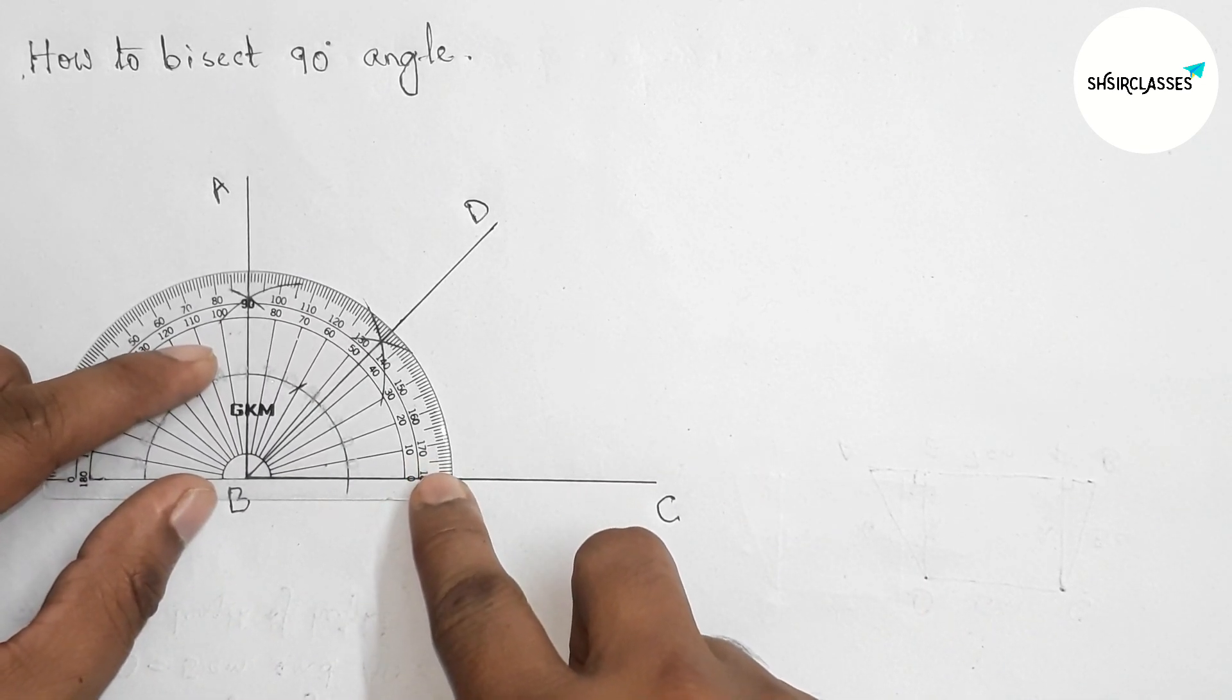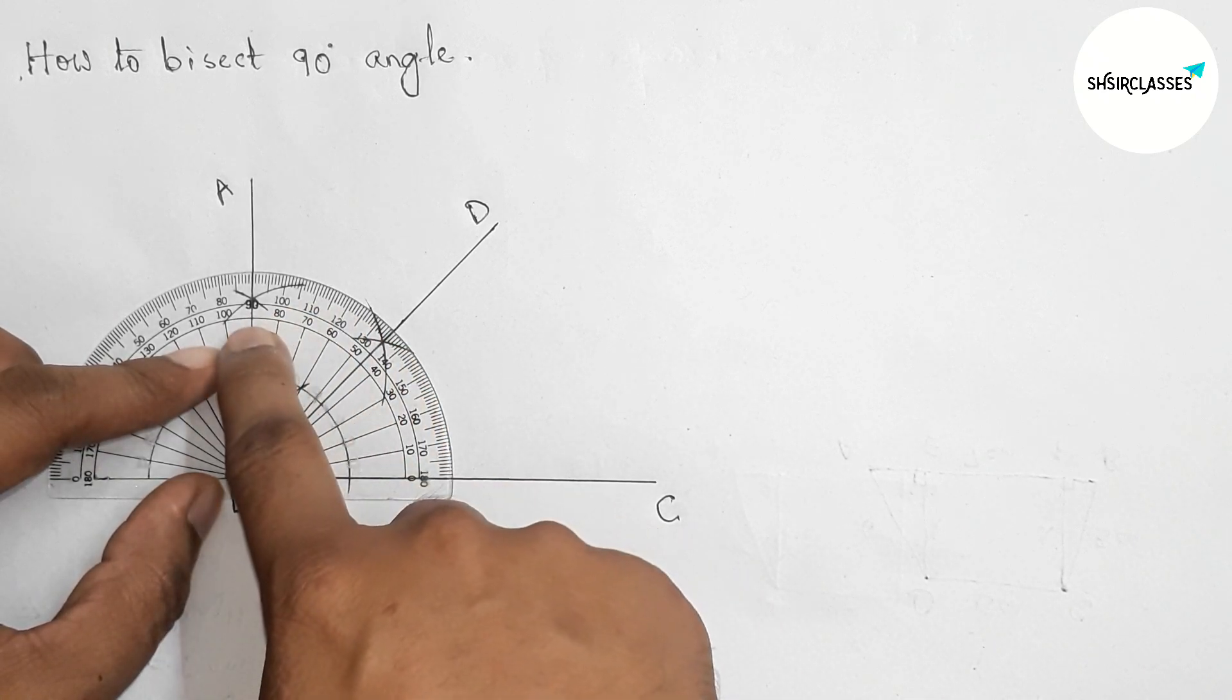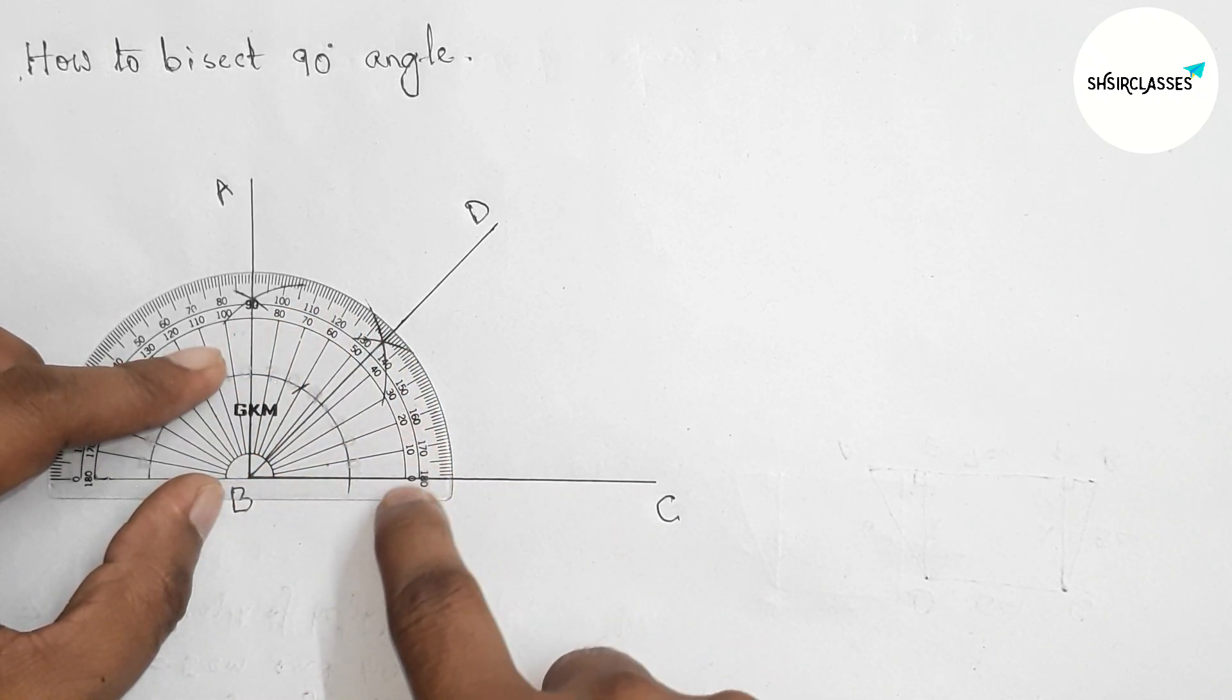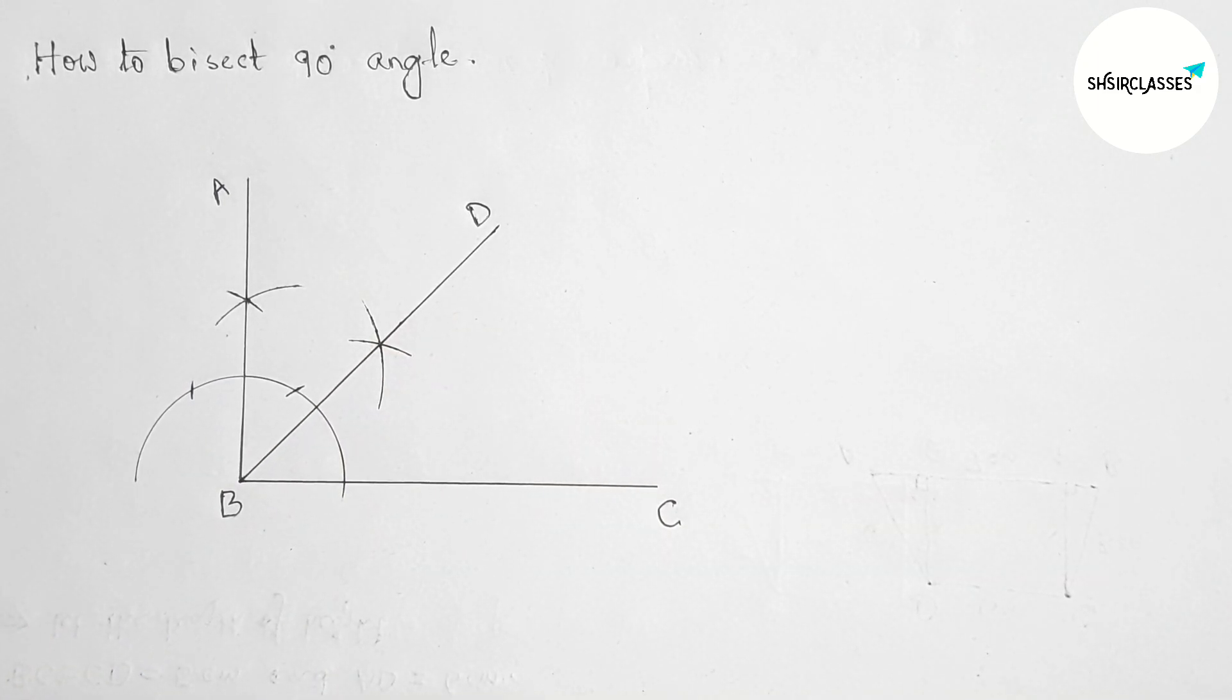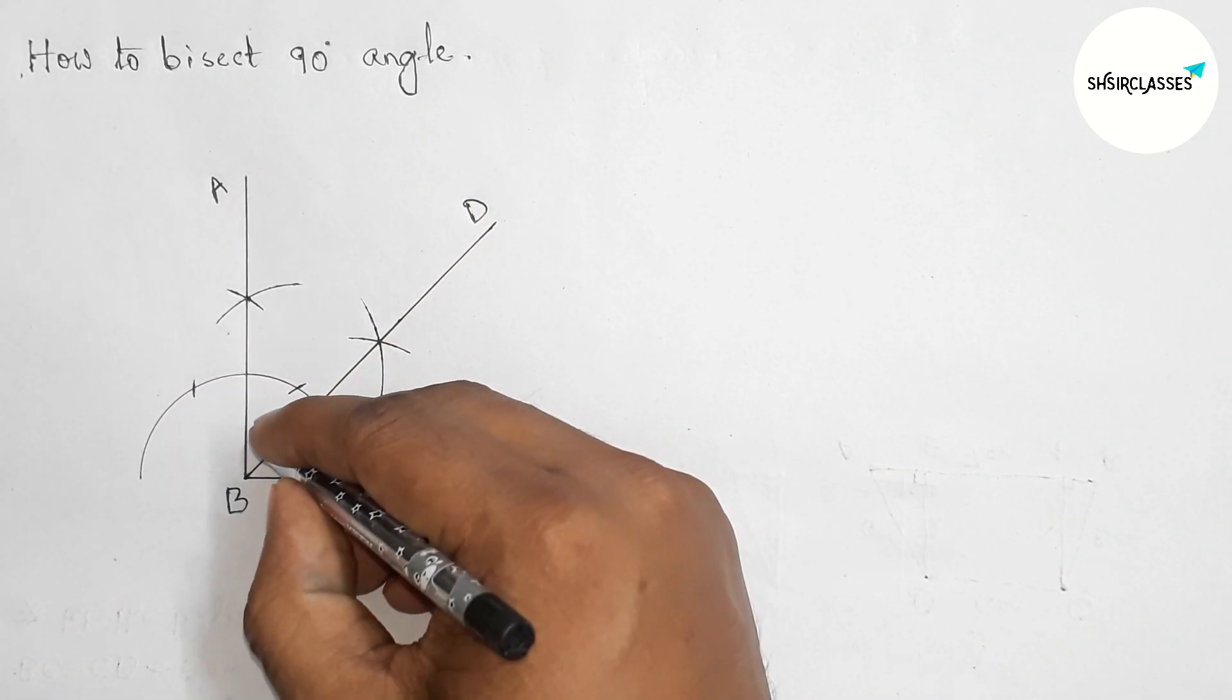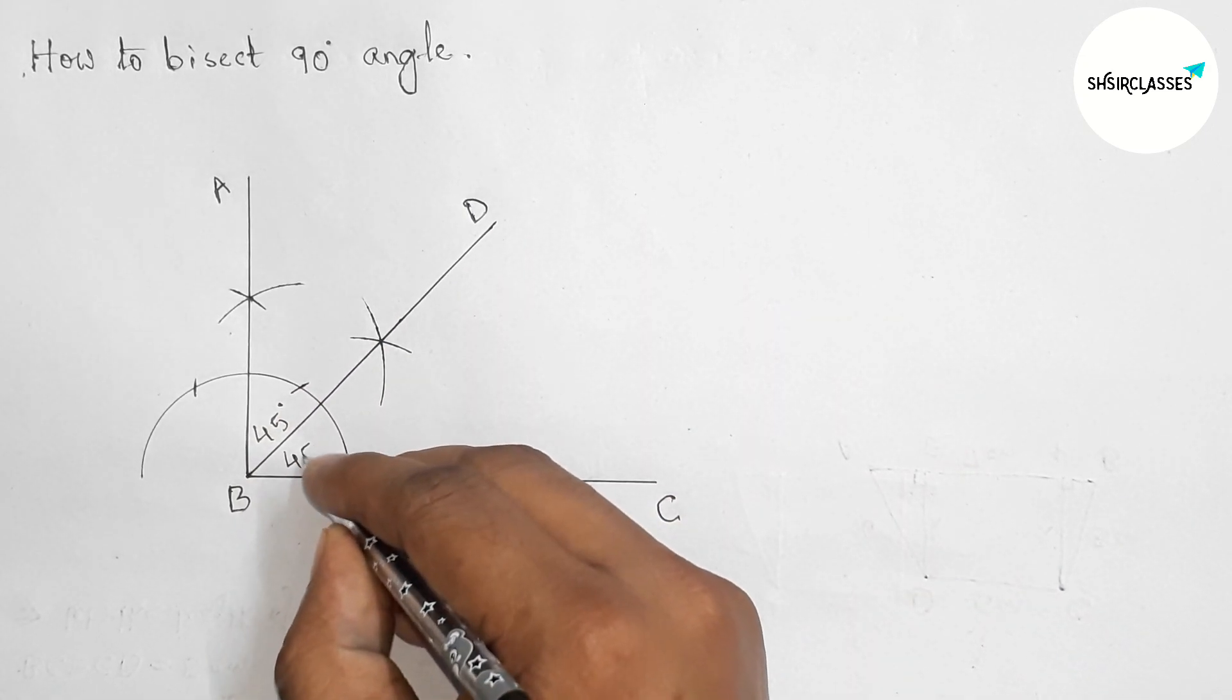Now checking with the help of a protractor. Here this is perfect 90 degrees and here this is 45. Between 50 to 40, this is perfectly 45-degree angle. So here this is 45 and this angle is 45.